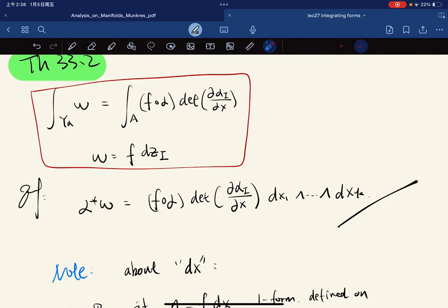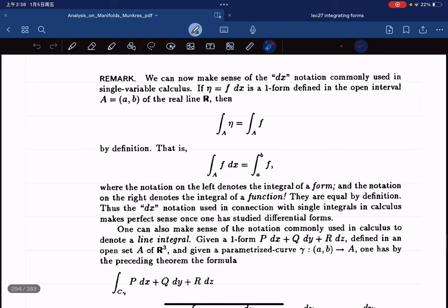And now there's a remark that seems very interesting. It makes sense of the dx notation commonly used in single variable calculus. So this is a one-form, the integral of nita, which becomes this. And this is basically this for A equal to [a,b]. So right? This is like the notation in single variable calculus.